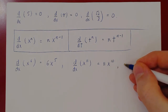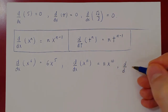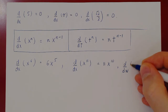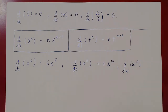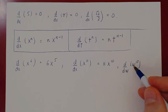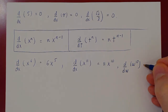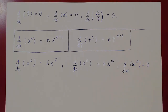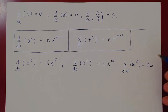What's the derivative with respect to w of w to the 13? We differentiate w to the 13 — bring 13 down, times w to the 13 minus 1, which is 12. So it's 13w to the 12.